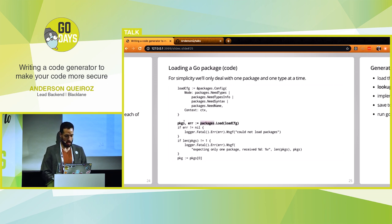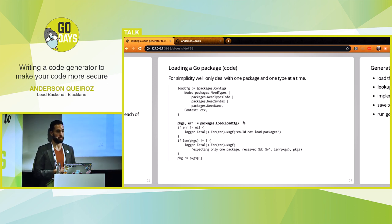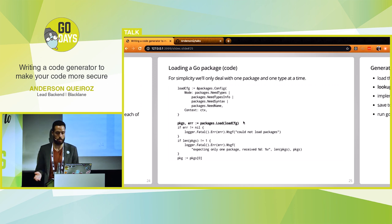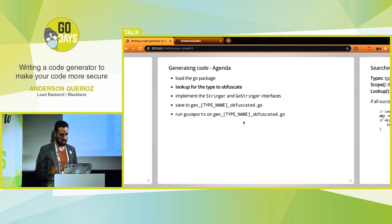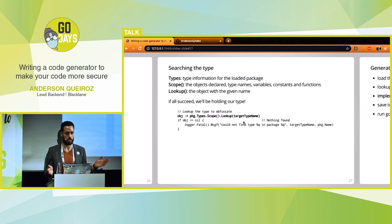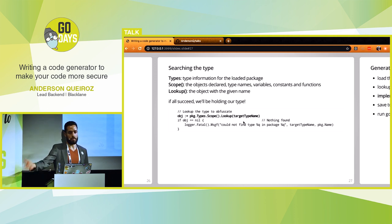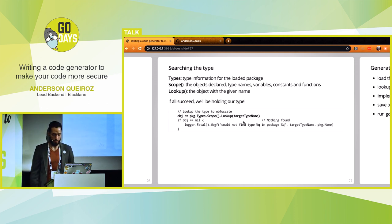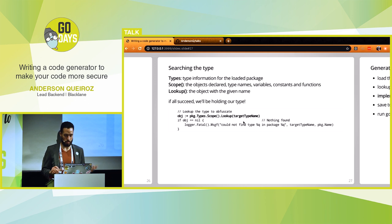Once we've chosen what to load, we call packages.Load and get back a list of Go packages. For simplicity we only deal with one, so we handle the error and check if we have more than one package — if so we throw an error. With the package at hand, we inspect it to find our type. We access the package's types scope and call Lookup with our target name. If we get something it was found; if nil, it was not found and we handle the error.